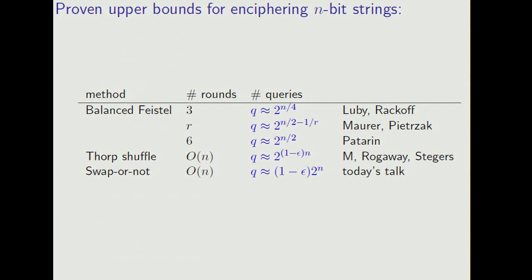Luby and Rakoff showed that three rounds of balanced Feistel, or four rounds if you want CCA security, will give security, provided that the number of queries is around the fourth root of the size of the domain. This can be improved to about the square root of the size of the domain, but there's reason to believe that we're not going to be able to prove much better than that for balanced Feistel.